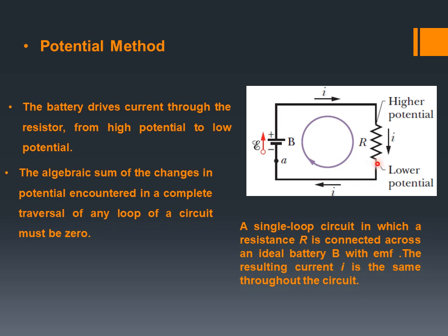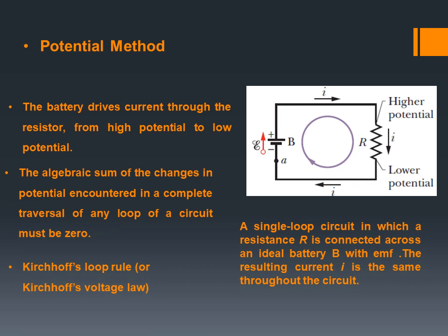Similarly, the lower part of the resistor is at lower potential because it is connected to the negative terminal of the battery. The potential at the lower terminal of the battery appears at the lower part of the resistor, and the potential at the positive terminal appears at the upper part of the resistor — because the two wires have zero internal resistance. This is Kirchhoff's loop rule, also known as Kirchhoff's voltage law.